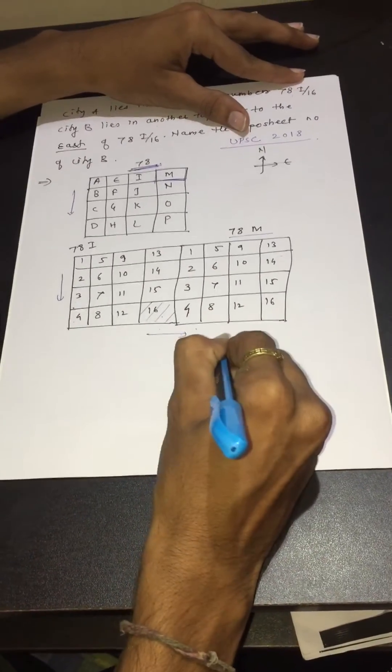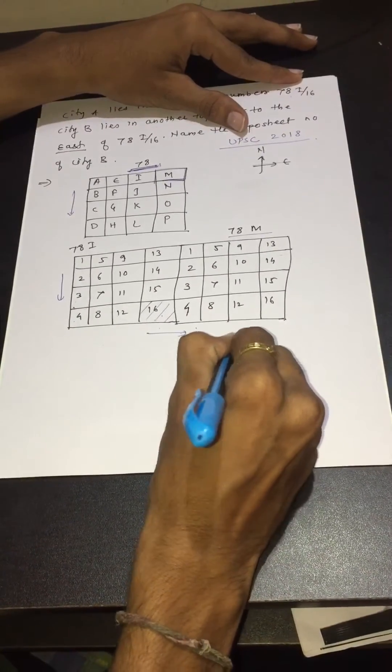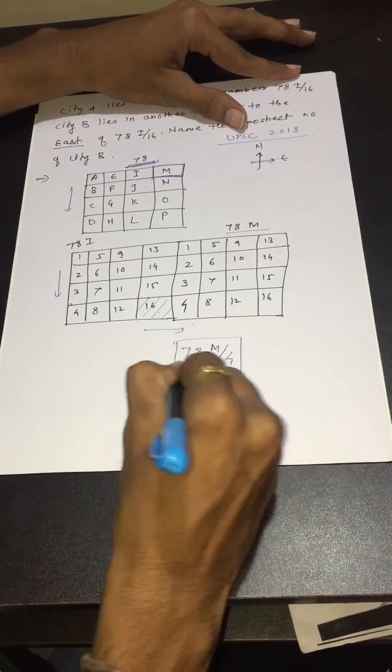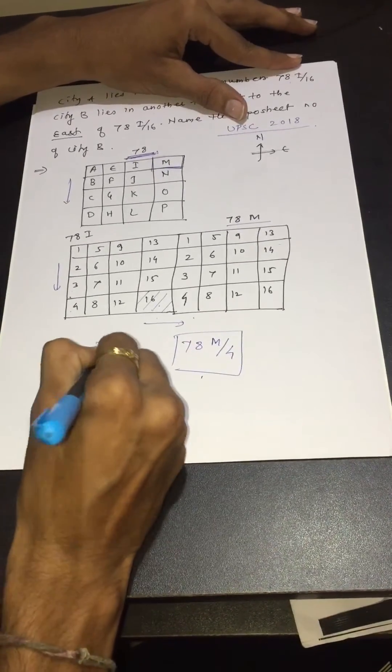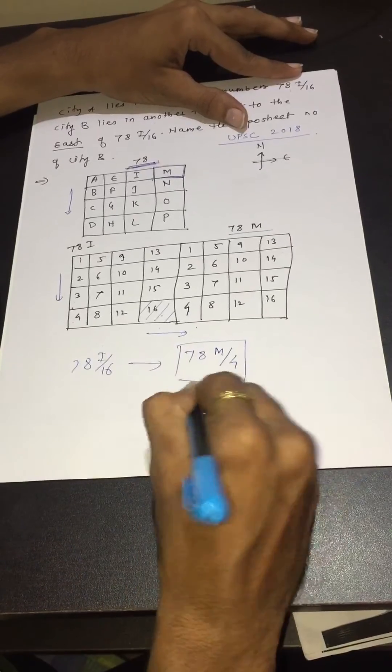This number is 78 M by 4, which is lying east of 78 I by 16. This is your final answer.